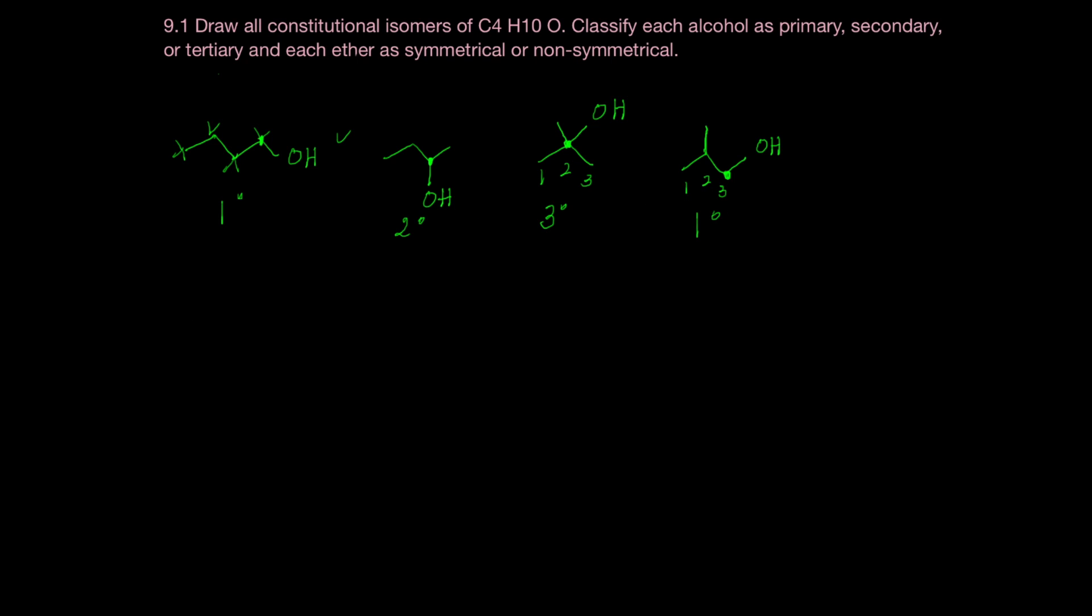Now, let's think about ethers. We have four carbons, and so we can split these up in different ways. We can put two carbons coming off the left and two carbons coming off the right. That would give us a symmetrical ether.